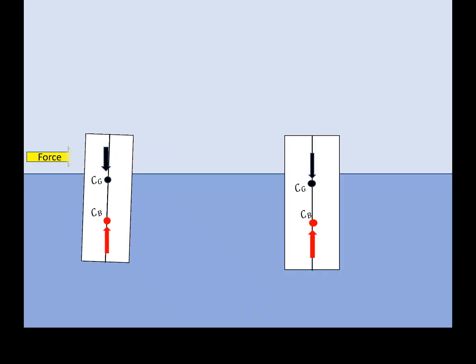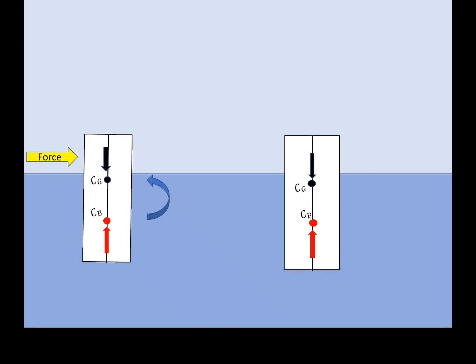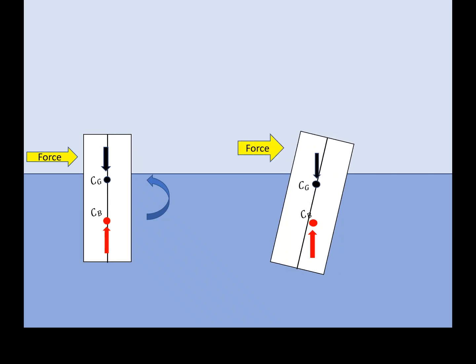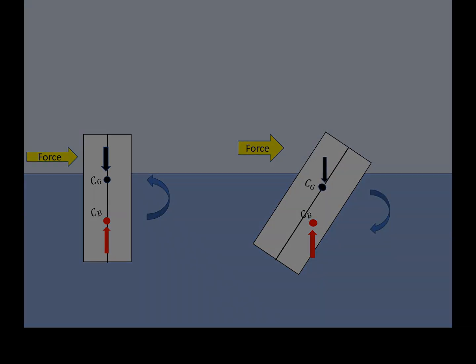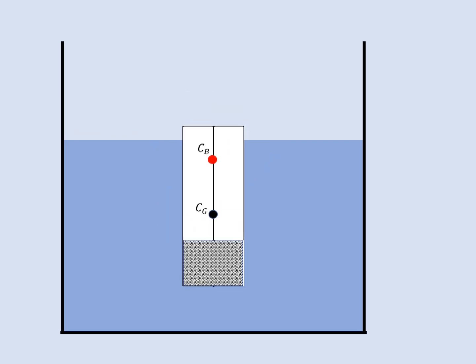If a force hits an object and it's tilted, it may cause a restoring force. If it's tilted too far, the centre of gravity might cause a destabilising force. A SPAR buoy has a low centre of gravity because it is ballast loaded.